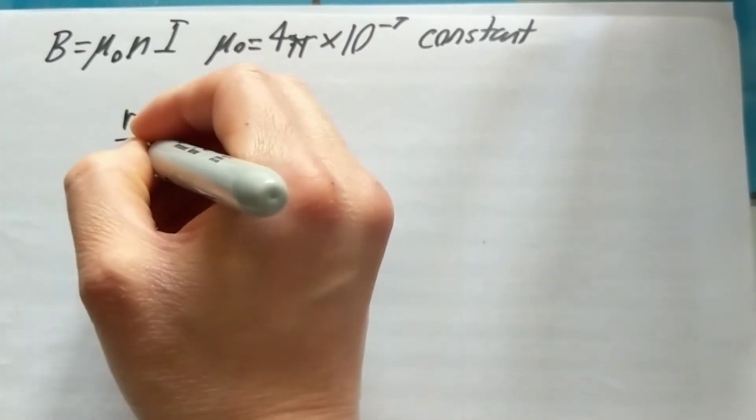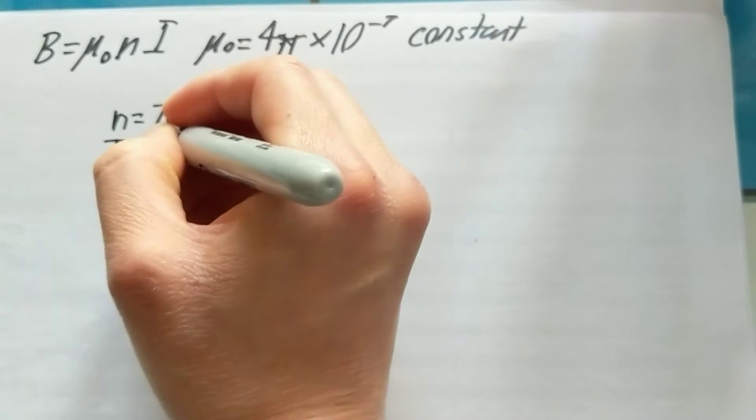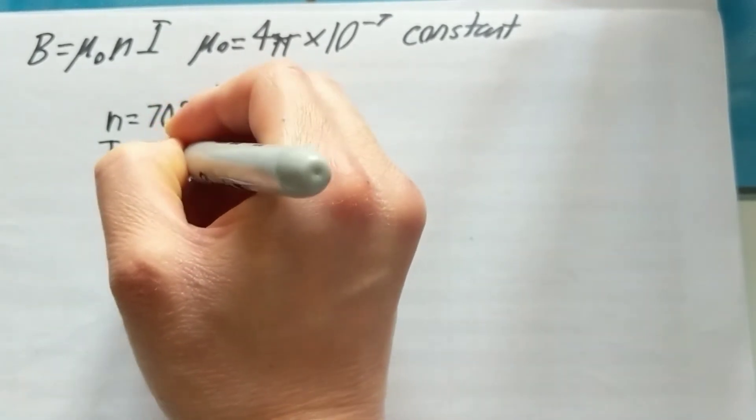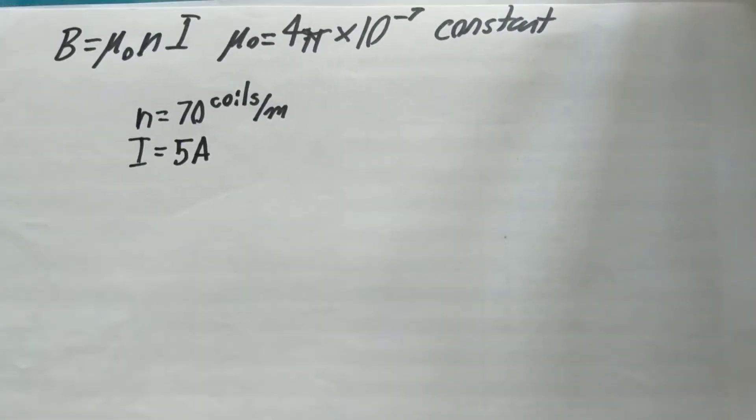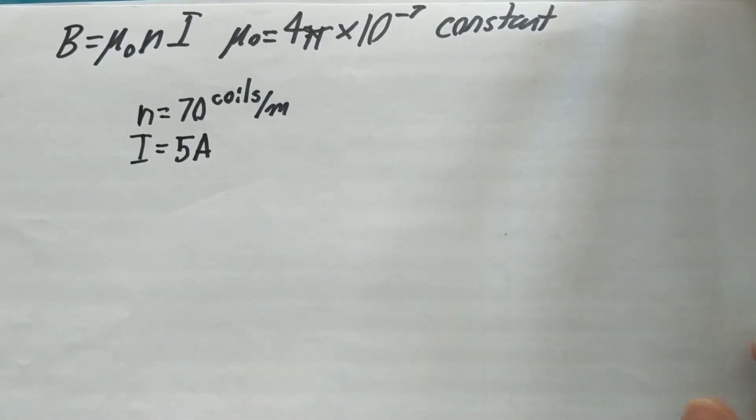Then you have your current, which is always measured in amps, and that would be 5 amps. I'm just going to clear up the camera there. So you notice that now we have our three values.